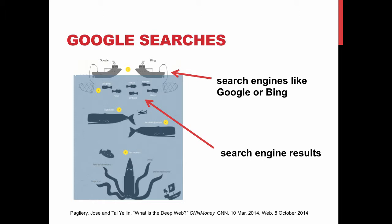We've already talked about searching the deep web — how to search in the catalog for books and in our databases for articles, videos, and other types of resources. All of these things are not available through Google. But today, we're going to talk about how you can find the best of that 1% of stuff that is searchable and found in Google.